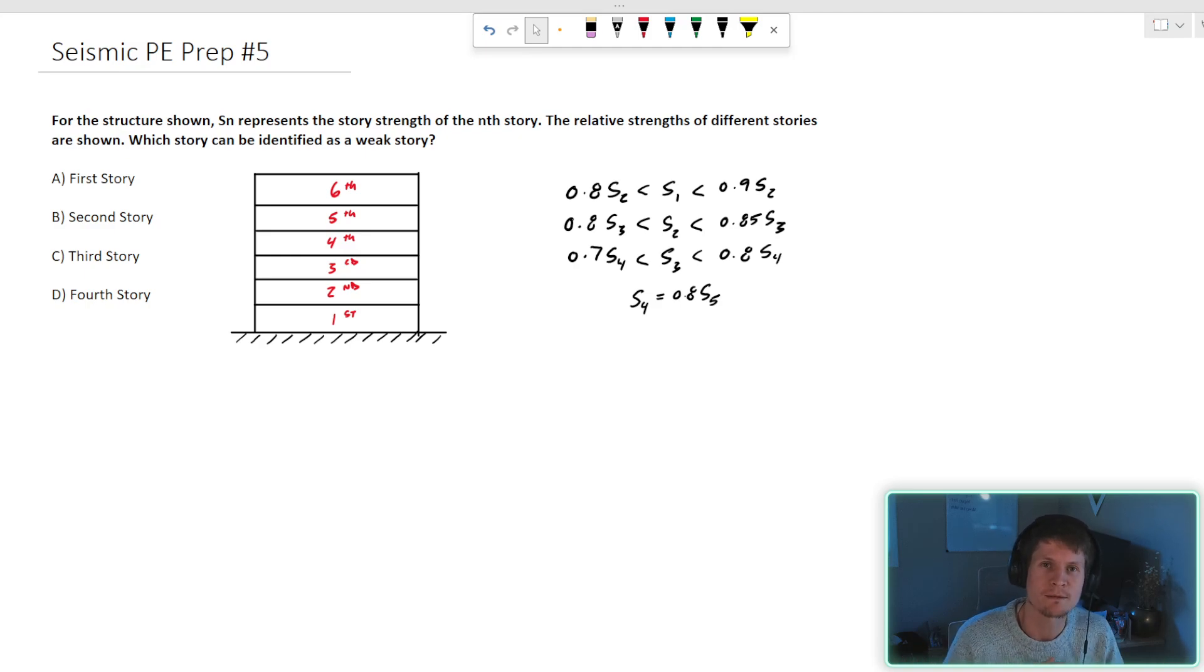Team, what's going on? PE seismic prep, example number five. We're going to be talking about some structural irregularities. Let's jump right into it.